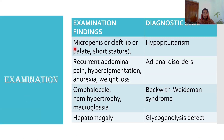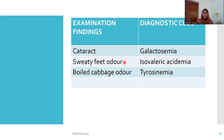On examination, look carefully for clues to diagnosis. A micro-penis or cleft lip/palate with hypoglycemia may suggest hypopituitarism. Recurrent abdominal pain, hyperpigmentation, anorexia, or weight loss may point to adrenal disorders. Omphalocele, hemihypertrophy, or macroglossia may suggest Beckwith-Wiedemann syndrome. Hepatomegaly with hypoglycemia may indicate glycogenolysis defects. Cataracts may suggest galactosemia. Hypoglycemia with sweaty feet odor may be isovaleric acidemia, and a spoiled cabbage odor may suggest tyrosinemia.